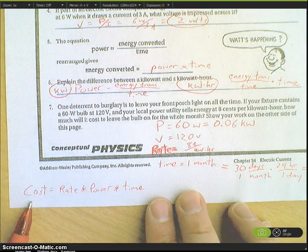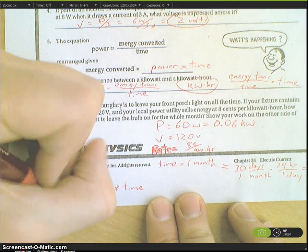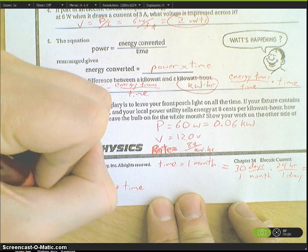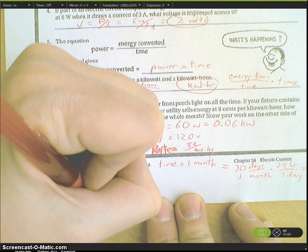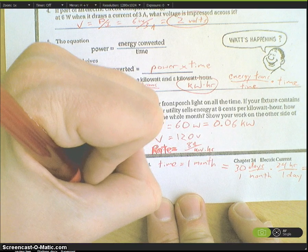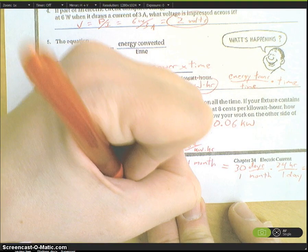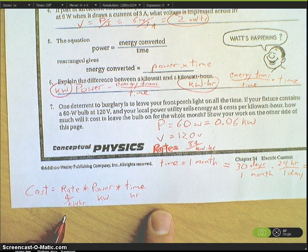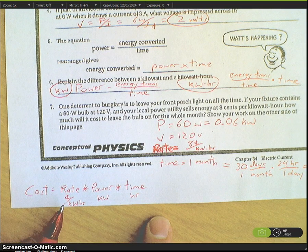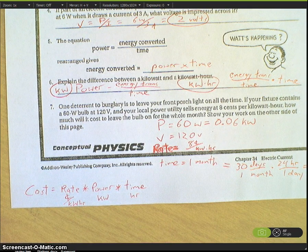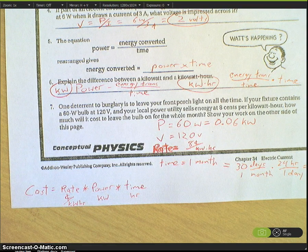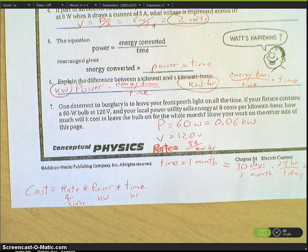I've written it out in equation form here: the cost is going to be rate, which is cents per kilowatt hour, times power, which is in kilowatts, and then time, which is in hours. If I cancel out these units, I'm left with just cents. You all following? So rate times power times time will give us the cost to operate that light bulb.